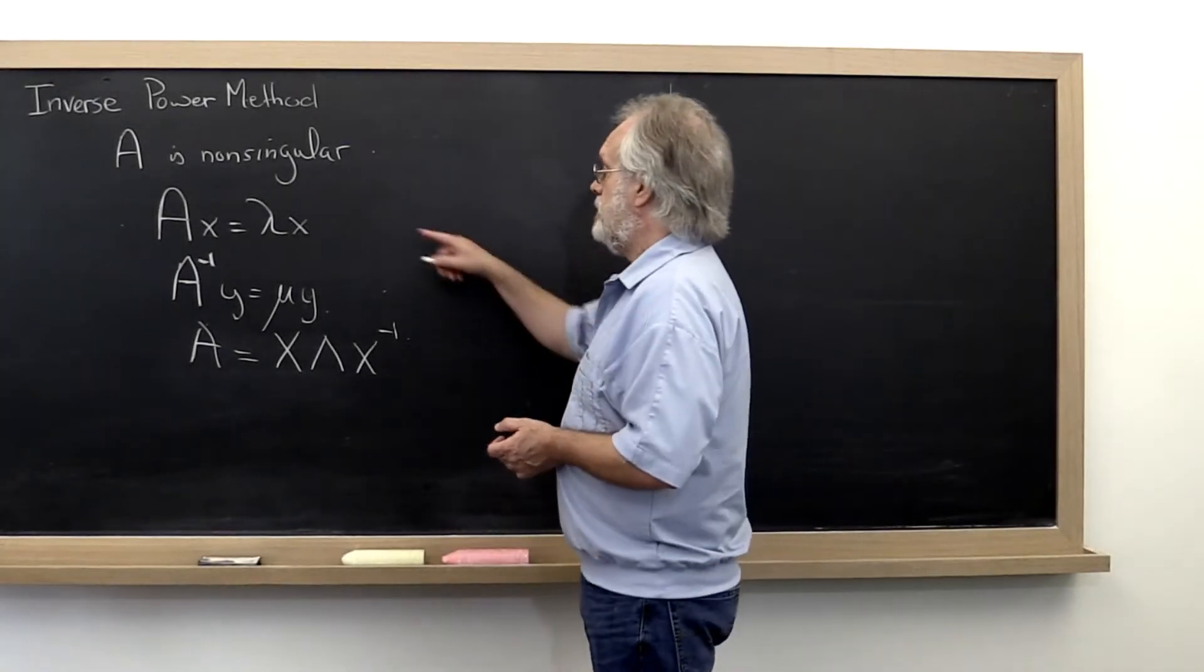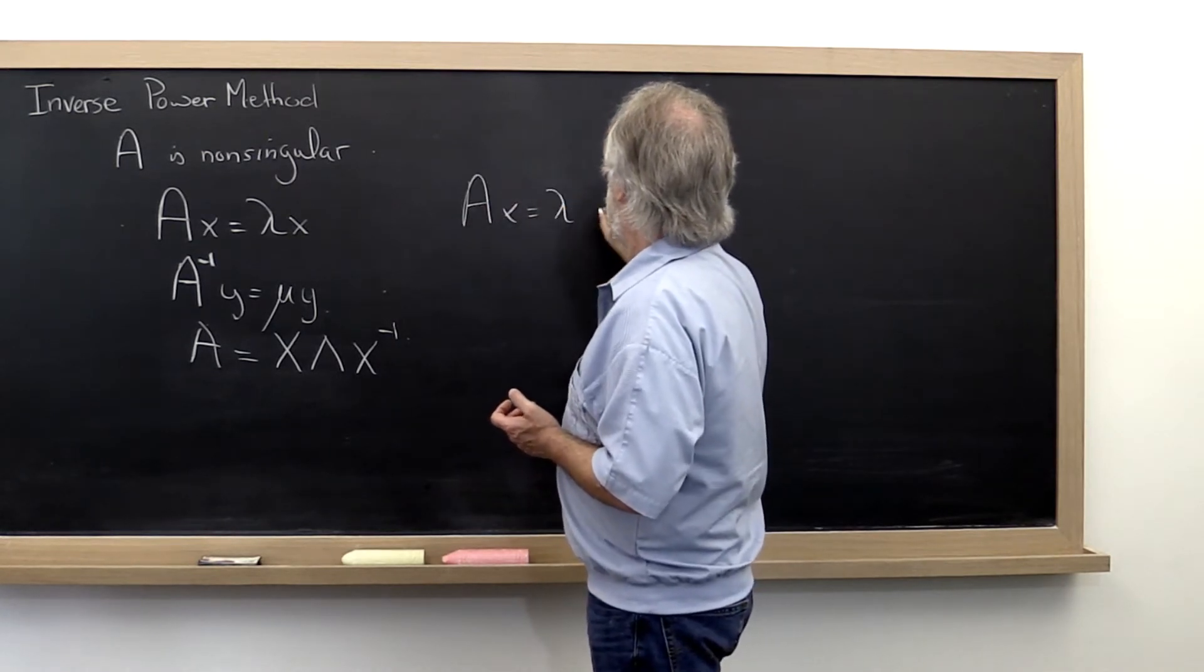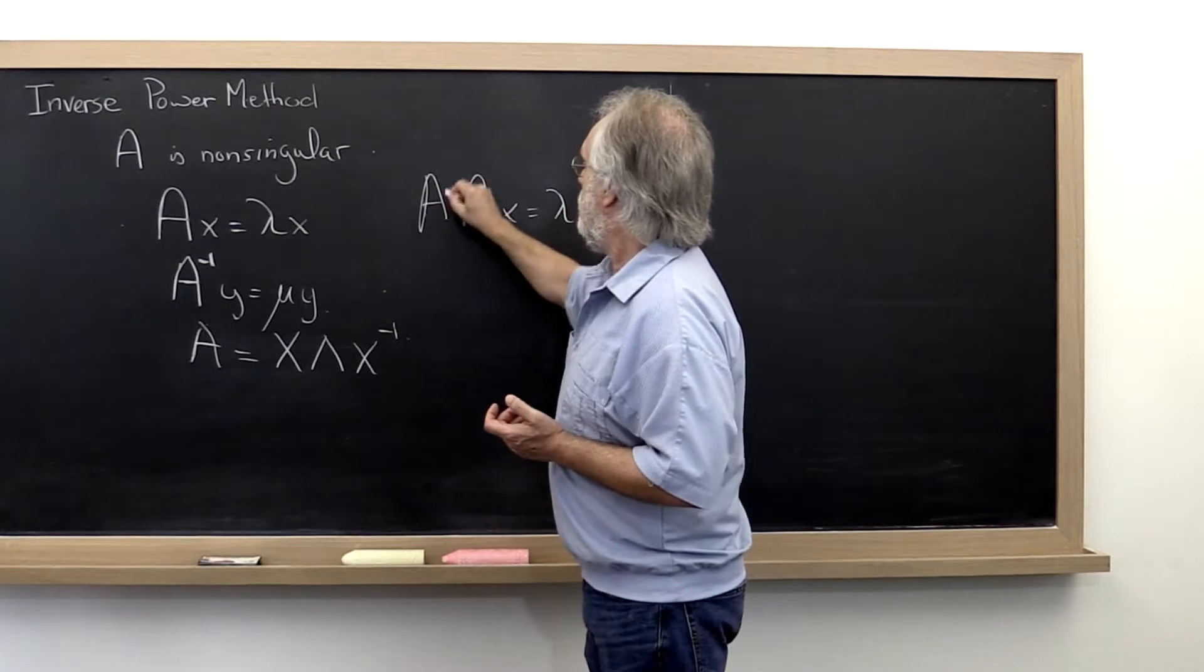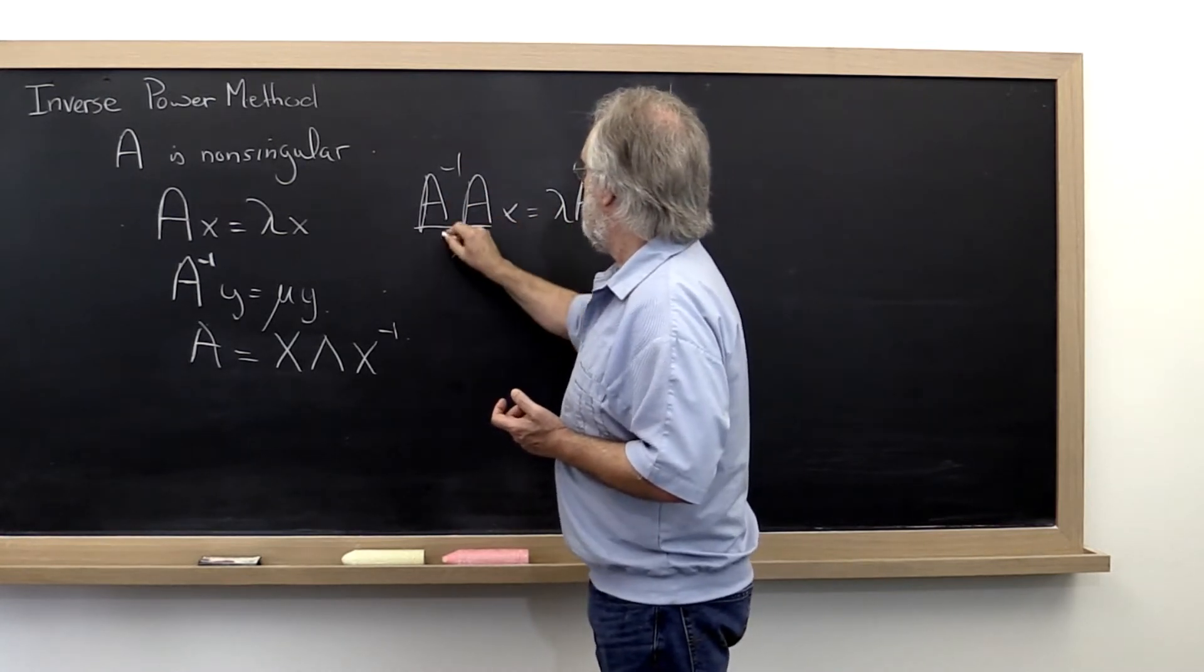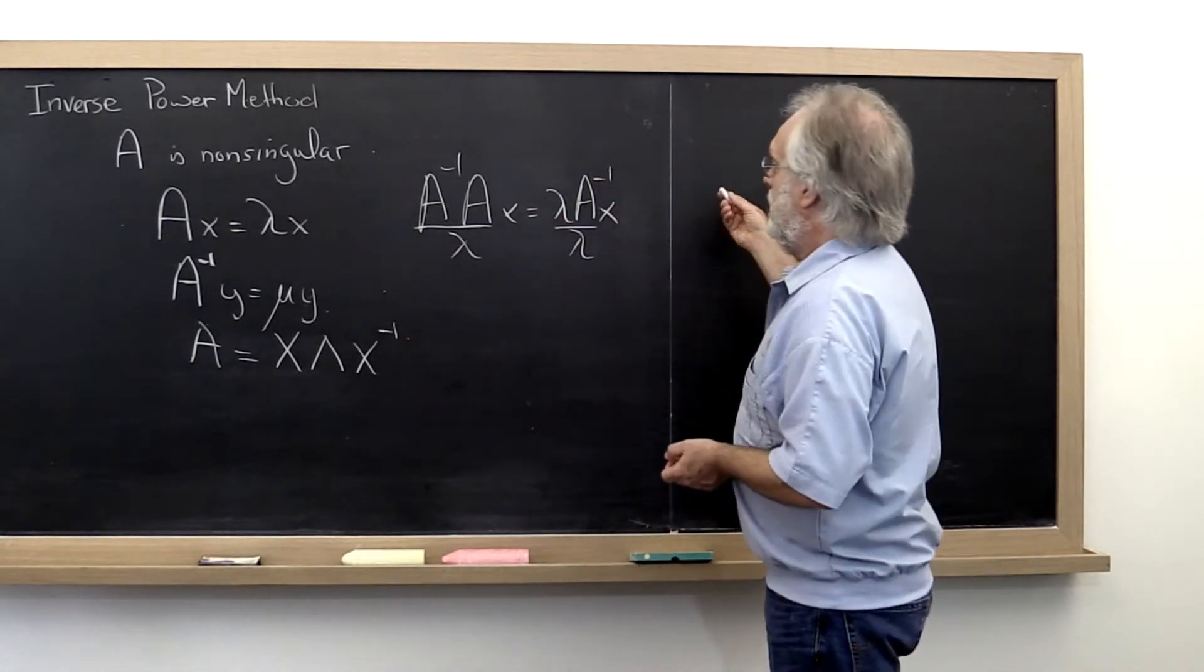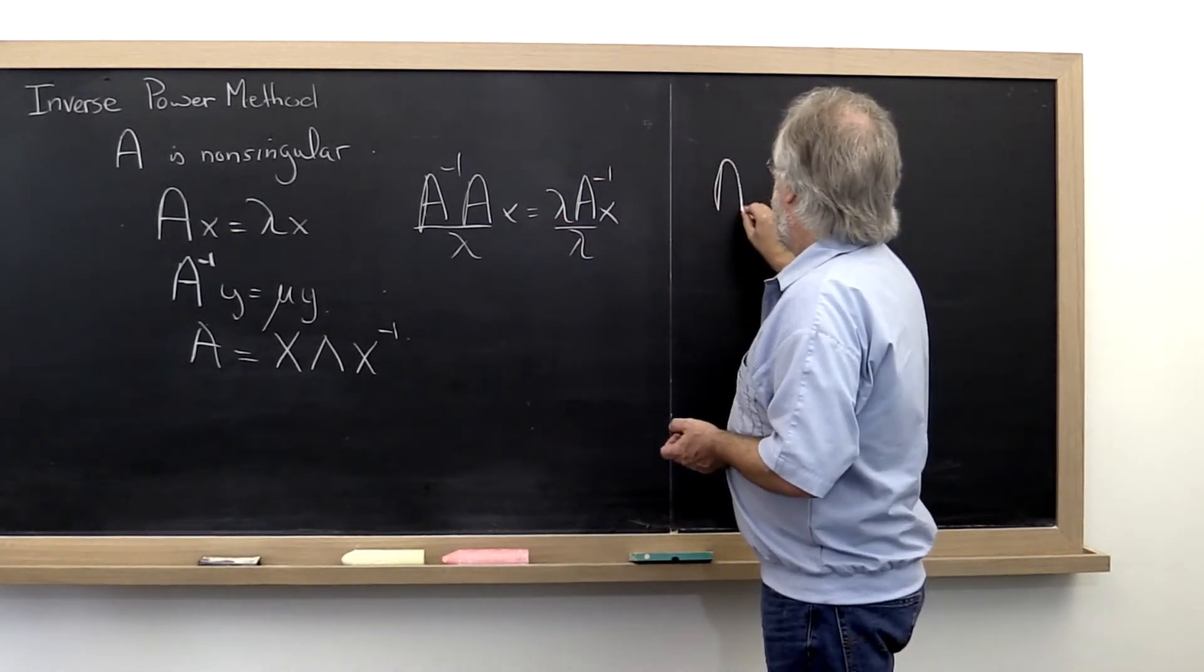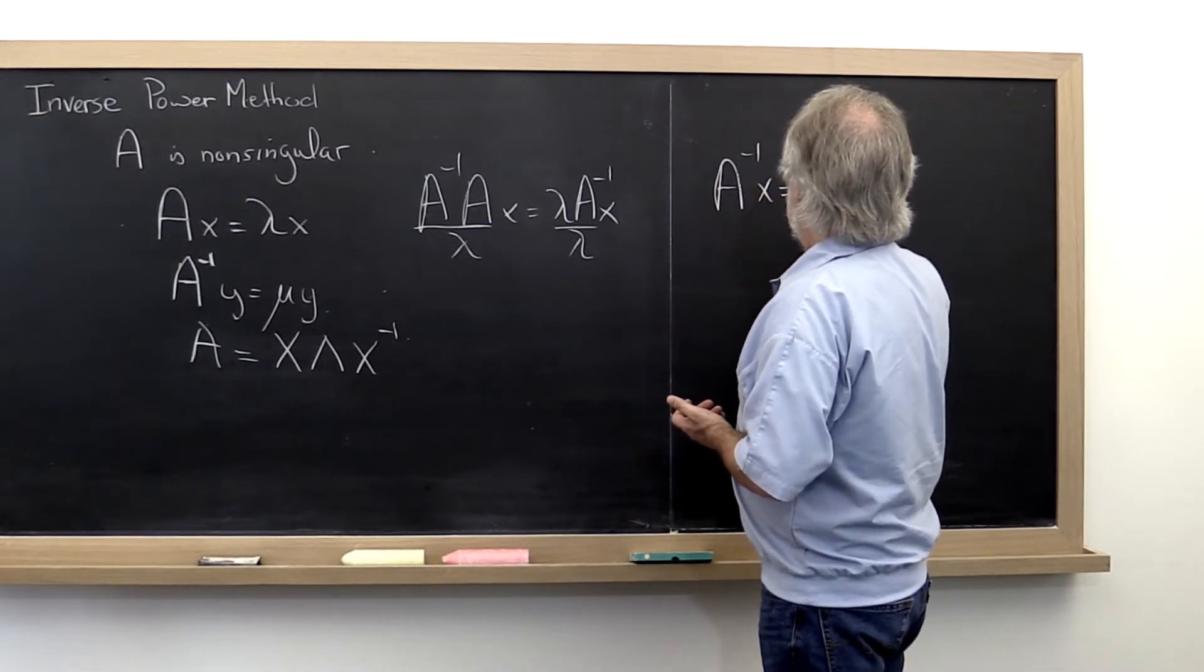So hopefully what you figured out is if we take A equals lambda times x, then we can always multiply both sides by A inverse. And we can divide both sides by lambda. And if we then rearrange it,